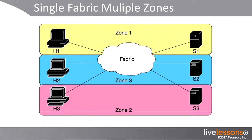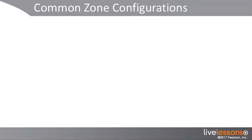So we can take a single fabric and divide it up into different zones where hosts, initiators, and storage device targets can basically act as ships in the night on the fabric. There are two common zone configurations that you'll run into in storage area networks.